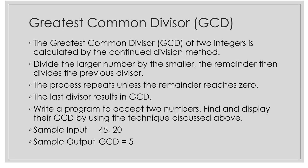The last divisor results in GCD. You are going to keep on dividing the dividend by the divisor; when the remainder reaches zero, the last divisor is called the GCD and that will be displayed. Now, write a program to accept two numbers and find and display the GCD by using the technique discussed above. The sample input is 45 and 20, and the greatest common divisor is 5.